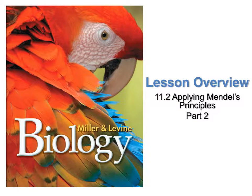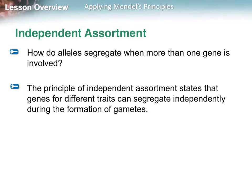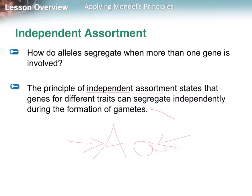Today we're going to talk about still applying Mendel's principles, but now we're going to go a little bit deeper and continue with some dihybrid problems. The question today is how do alleles segregate when more than one gene is involved? Remember that an allele is simply the different forms of the gene. The principle of independent assortment states that genes for different traits can segregate or separate independently during the formation of gametes — and remember gametes are egg and sperm cells.